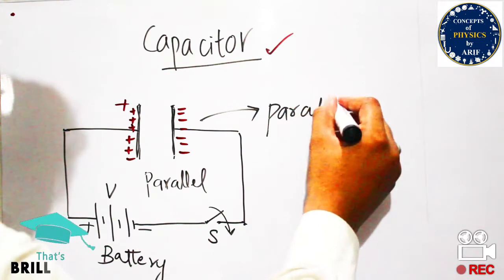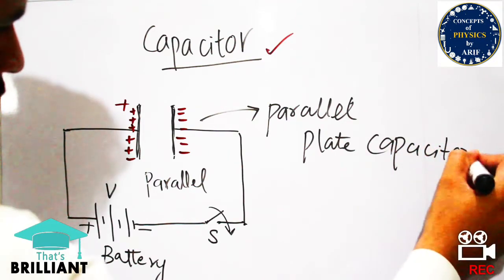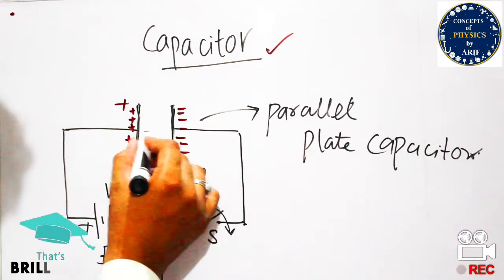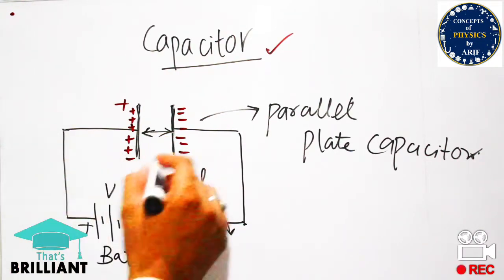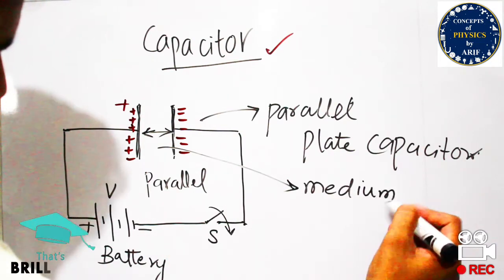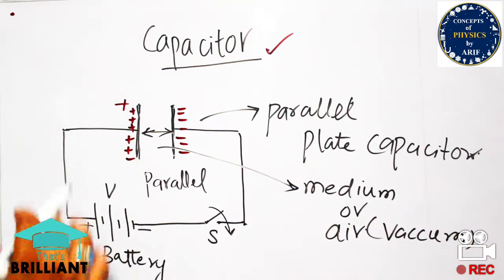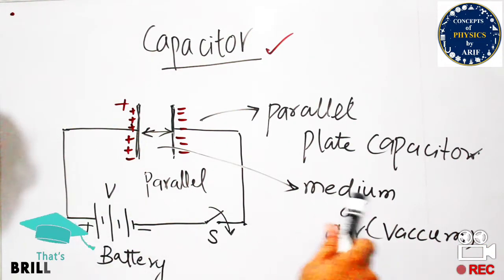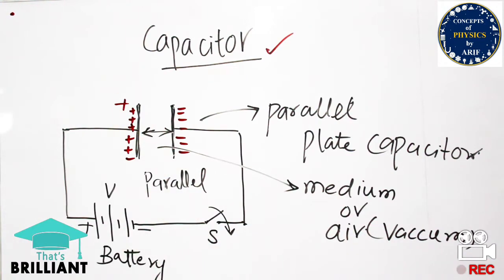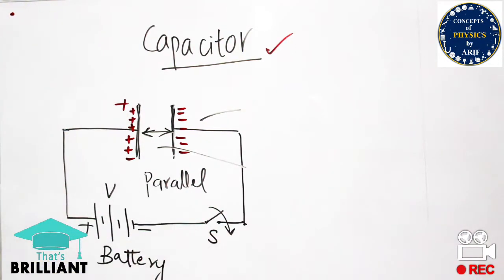The purpose of the capacitor is to store energy or store charge. To understand this storage, we need to know about the capacitance of the capacitor. This parallel plate capacitor has some separation between the two plates. When there is no medium between them, this is known as vacuum or air. If some medium like paper, wood, or plastic is present between them, that material acts as the medium, and capacitance can increase or decrease by placing a medium between the two plates.